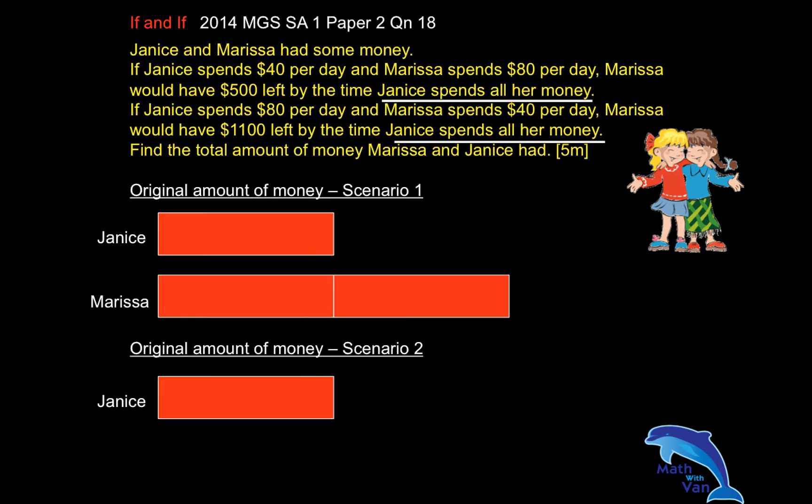This represents Marissa's spending, and we add on whatever is left, which is $500. So this is the original amount of money that Marissa has, and it should be the same for Scenario 2. Analyzing Scenario 2 now: Jenny spent $80 per day and Marissa spent $40 per day.